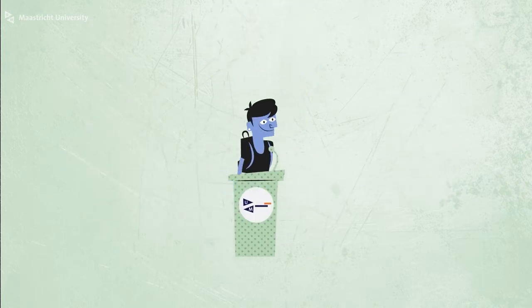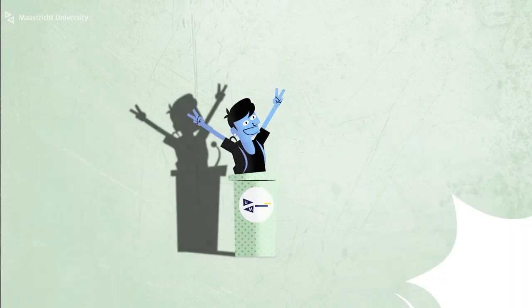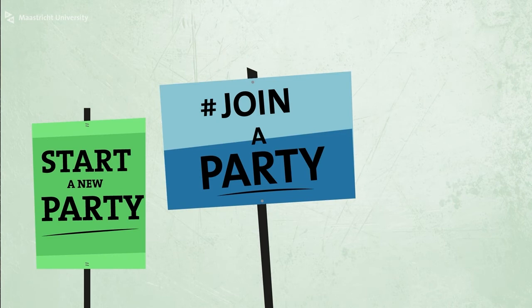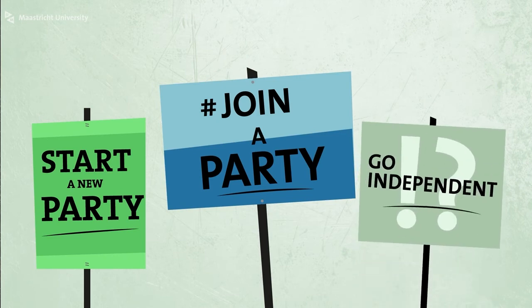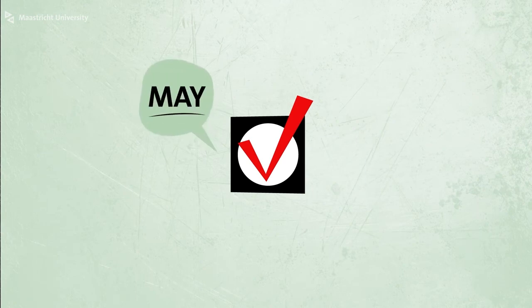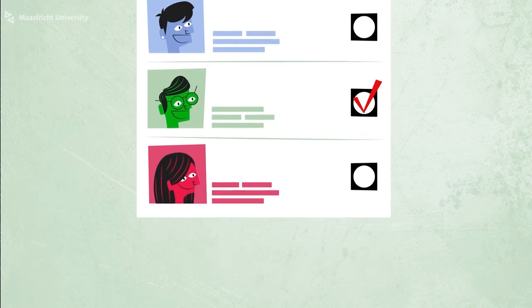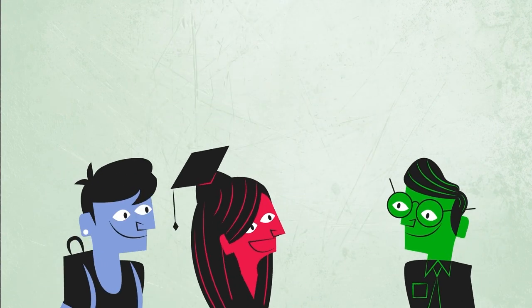As a student or employee, you can stand for election. You can join one of the existing parties, start your own party or stand as an independent candidate. The elections are held in spring, usually in May. You will receive an email inviting you to vote online. Make sure your voice is heard.